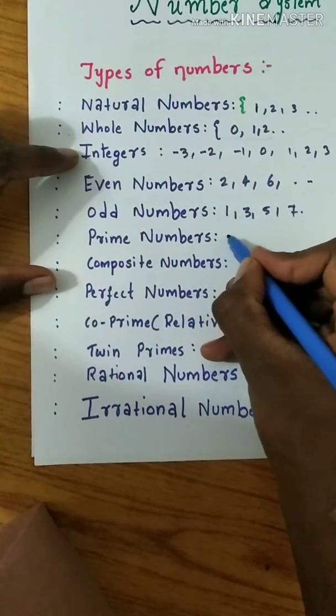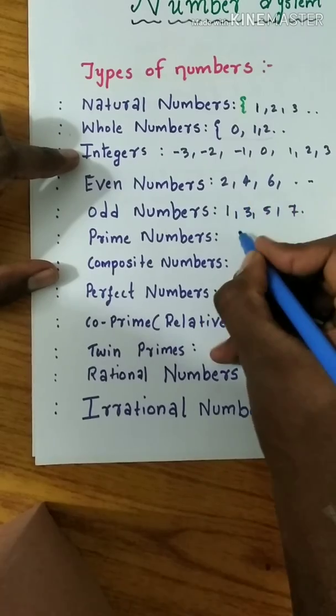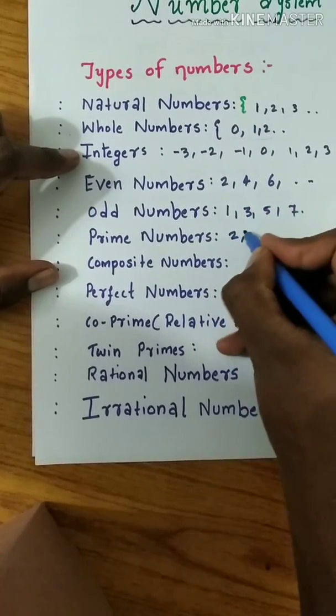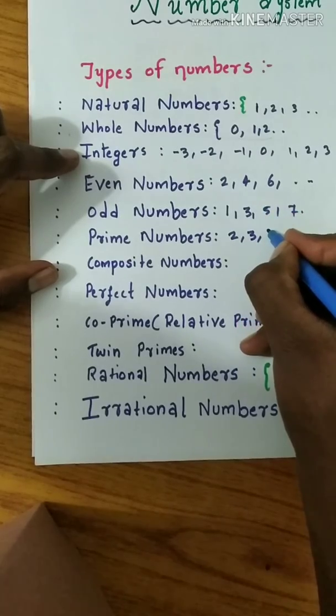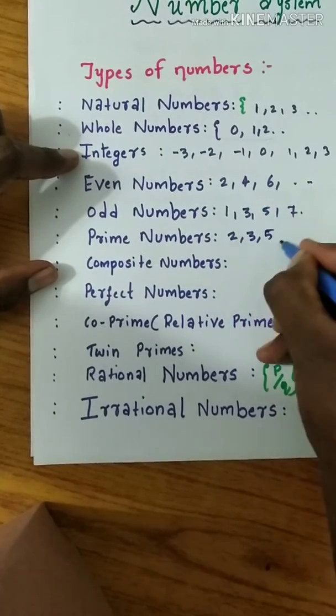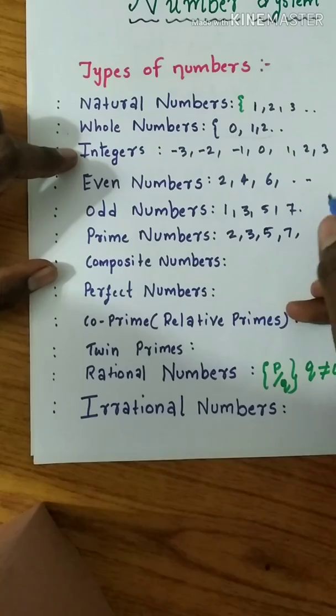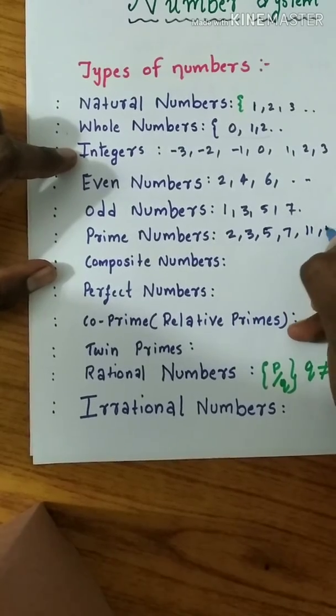Examples of prime numbers: 2, 3, 5, 7, 11, 13, 17, 19, 23, 29, 31, 37, 41, 43, 47, and so on.